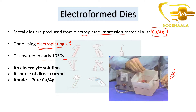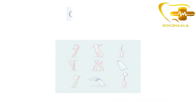In this image you can see the process of electroplating — how the impression material is electroplated. What we require is an electrolyte solution, a source of direct current, and an anode which can be pure copper or pure silver. In the bucket you can see the electrolyte solution and the power source providing direct current.